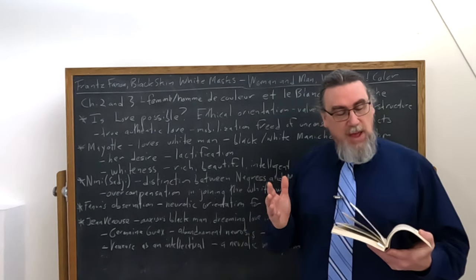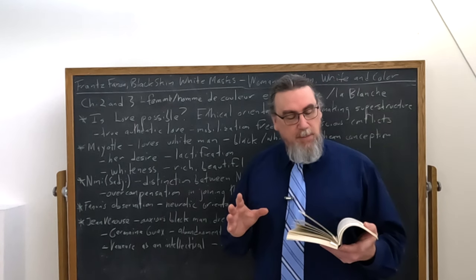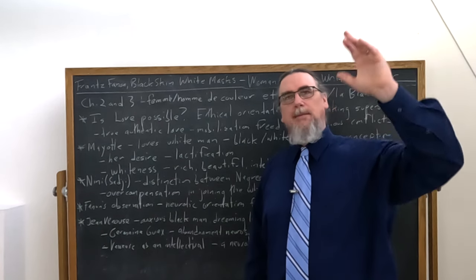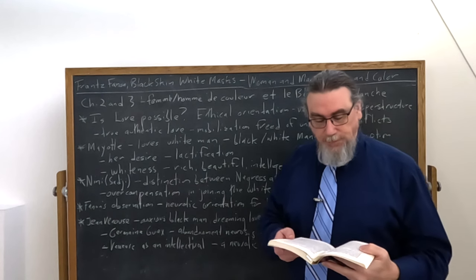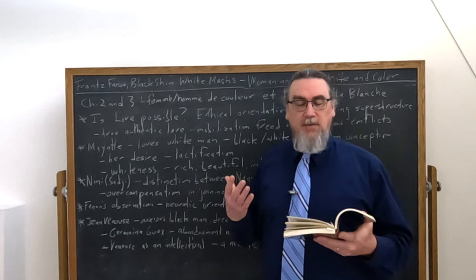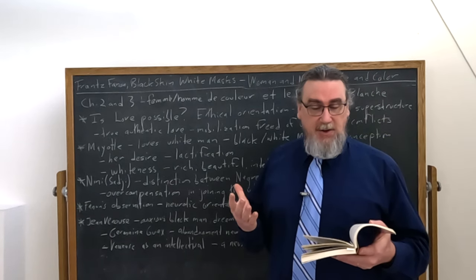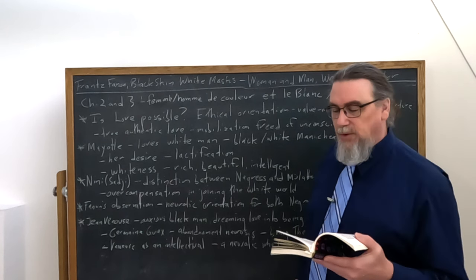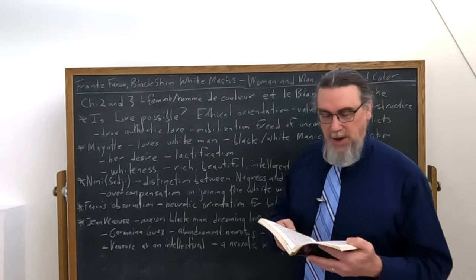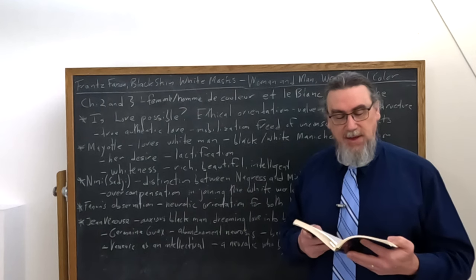So then he moves on to Abdoulaye Sadji, who writes this arguably autobiographical piece, Nini. Analyzing various passages of Sadji's story, I'm going to attempt to grasp the living reactions of the woman of color to the European. First of all, there are two such women. So we have a distinction to make here. Who are they? The Negress and the Mulatto. The first has only one possibility and one concern: to turn white. The second wants not only to turn white, but to avoid slipping back. A sort of hierarchy is in place when some people are in the middle part, others are at the top, others are at the bottom. So he says, what indeed could be more illogical than a mulatto woman's acceptance of a Negro husband? For it must be understood once and for all, it is a question of saving the race. And as we saw, saving the race is tied with lactification.